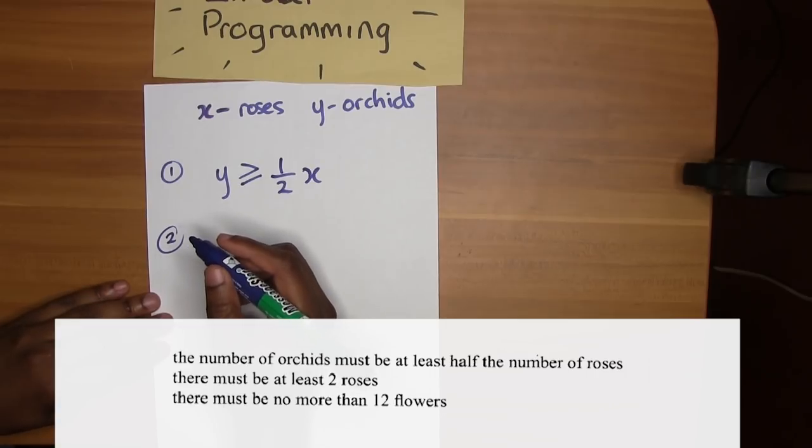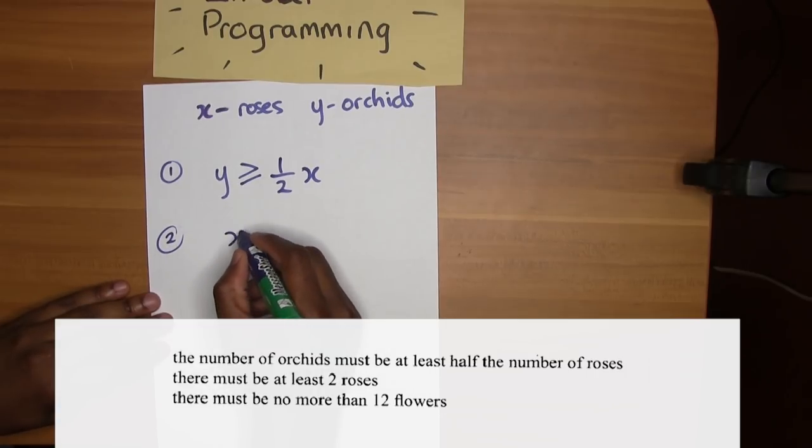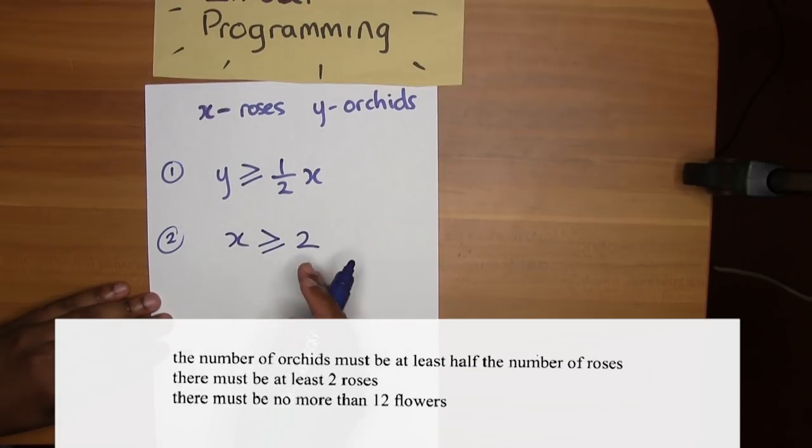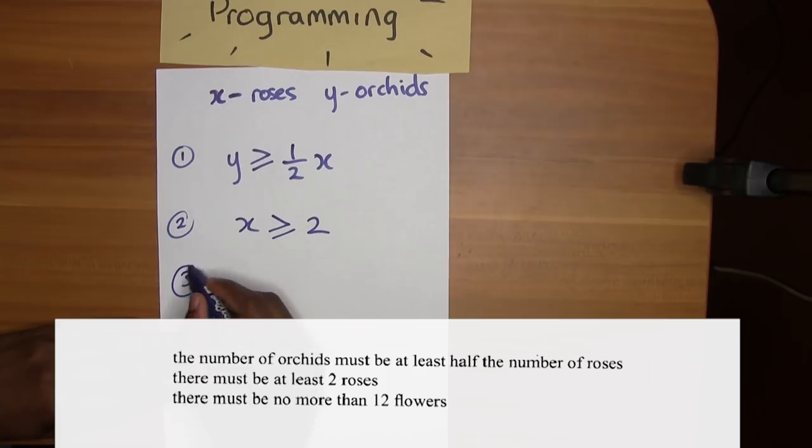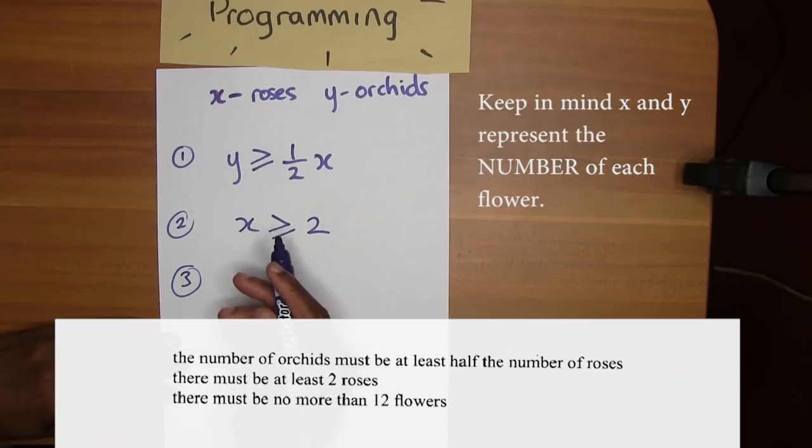Next one, there must be at least two roses. That's simple. x is greater than or equal to 2.